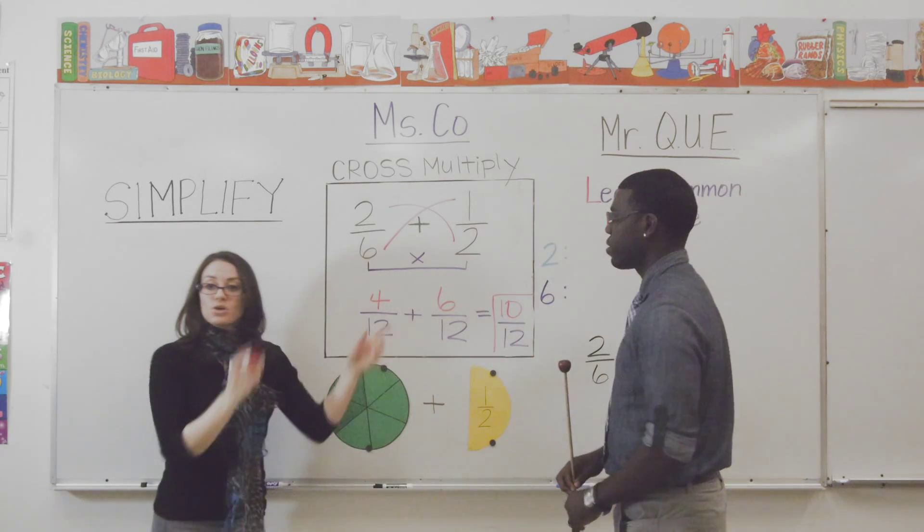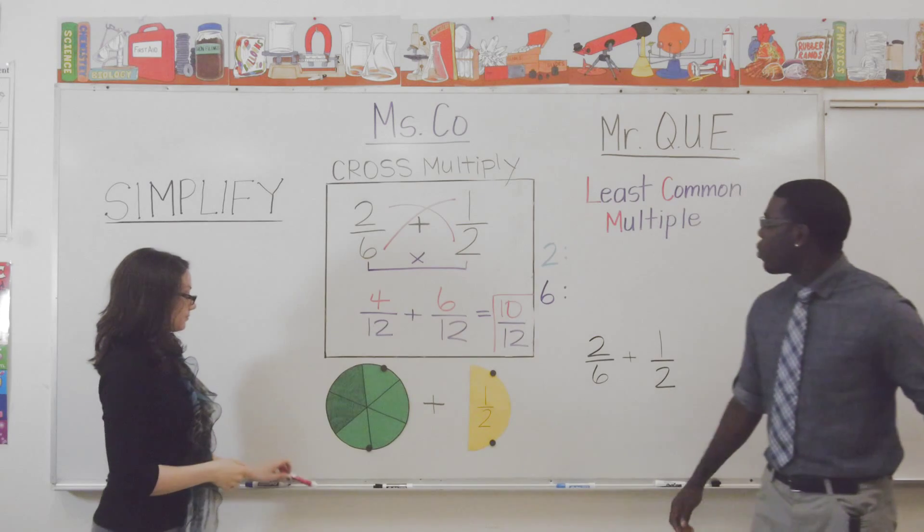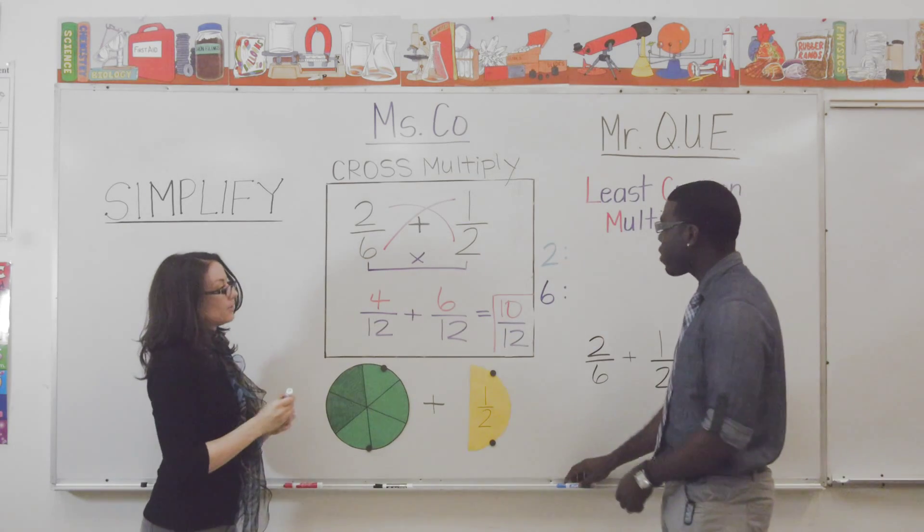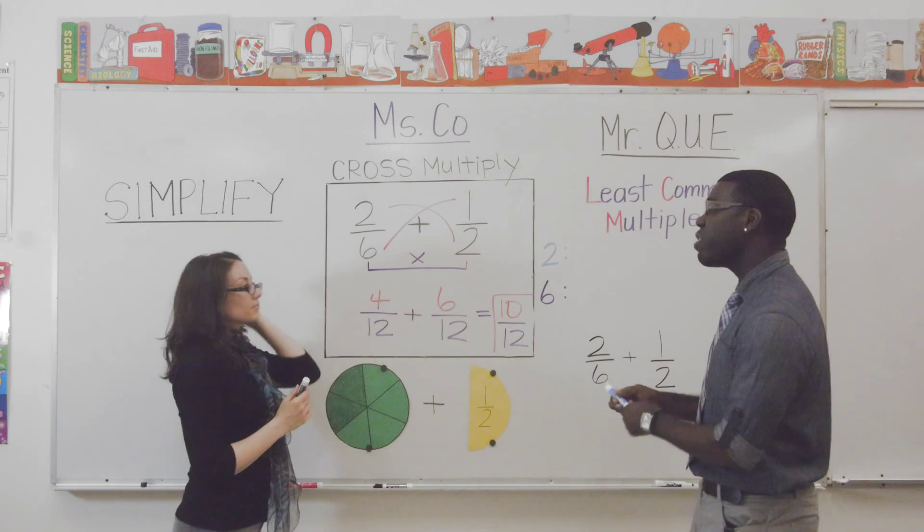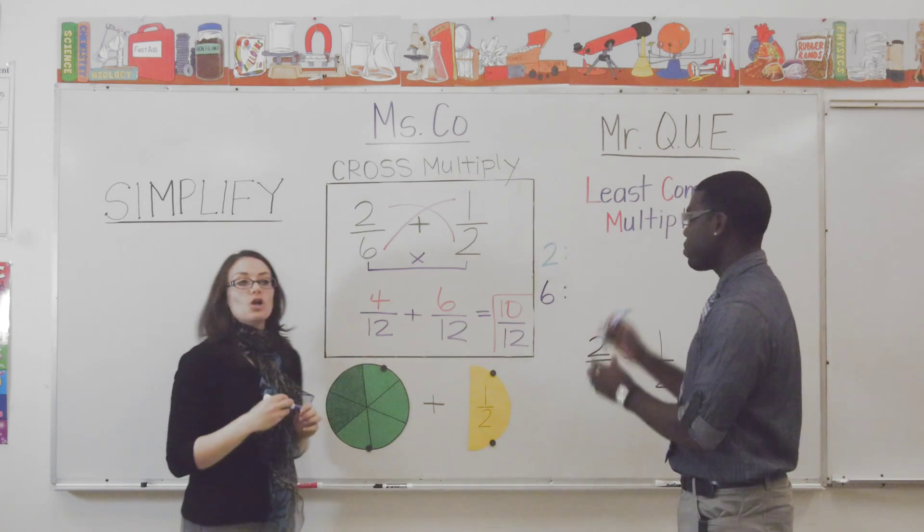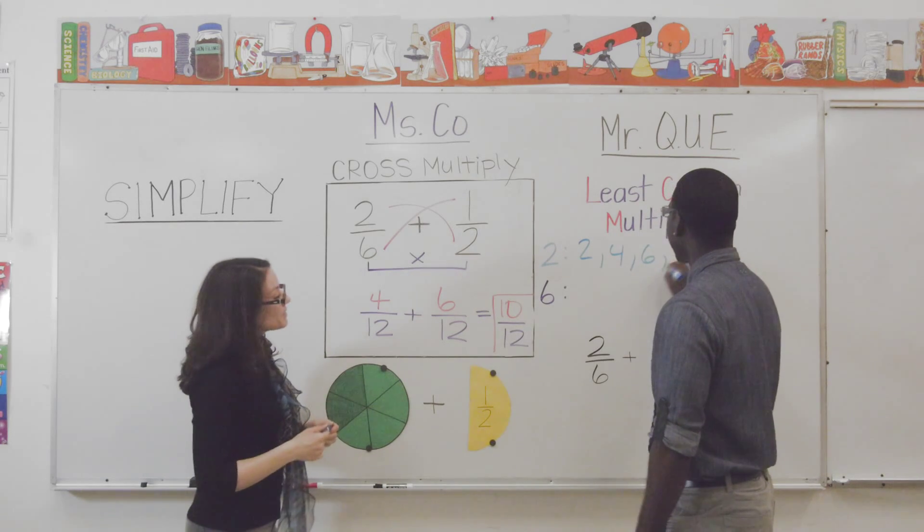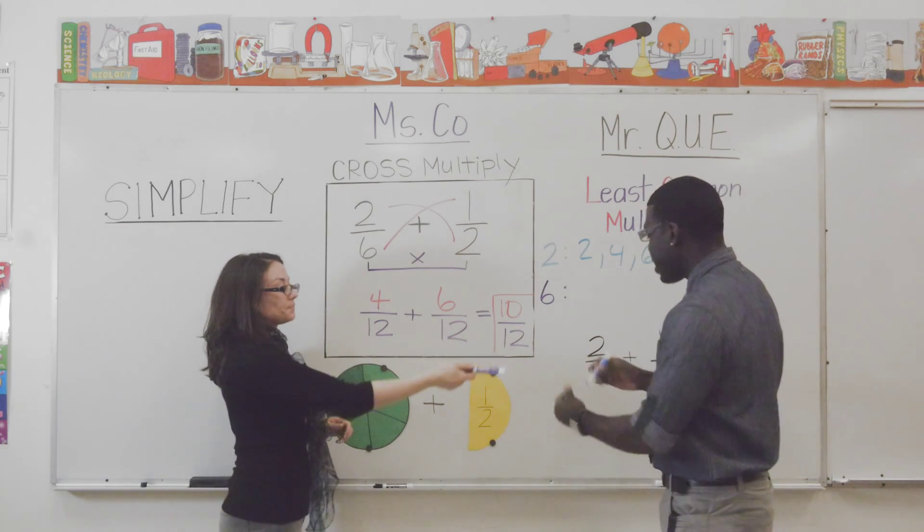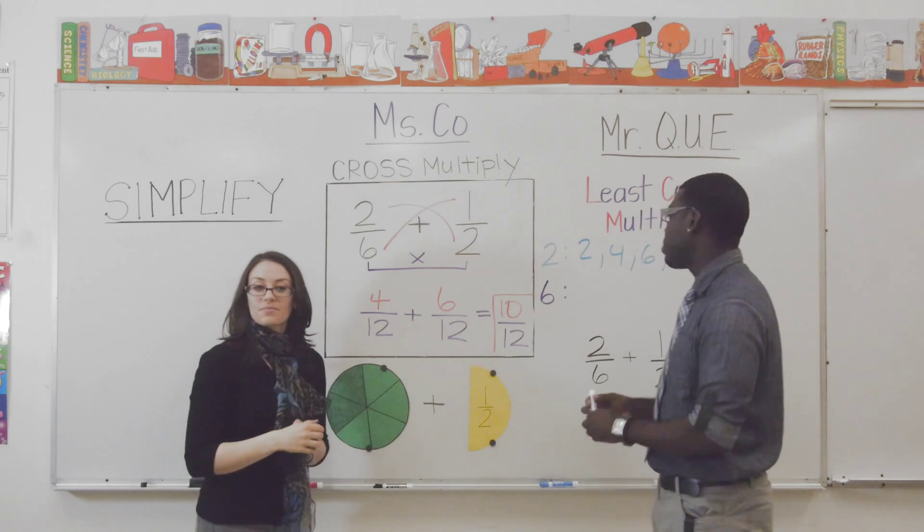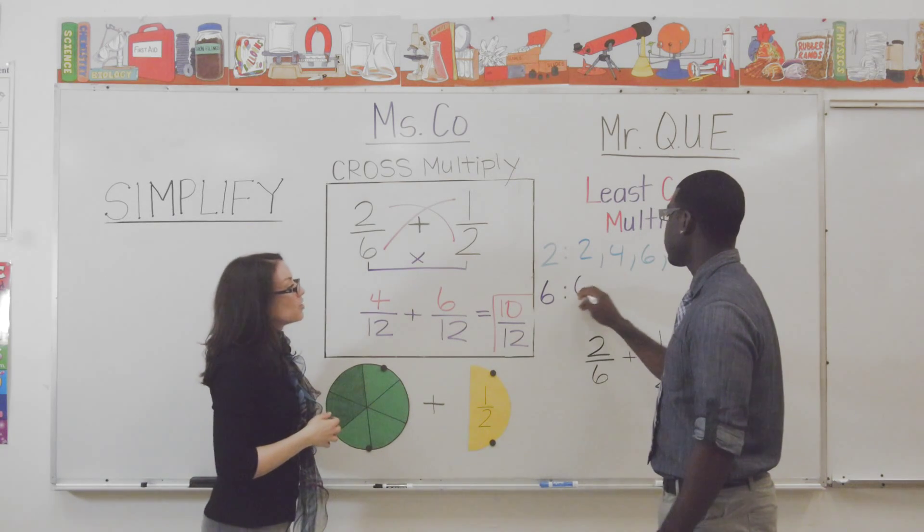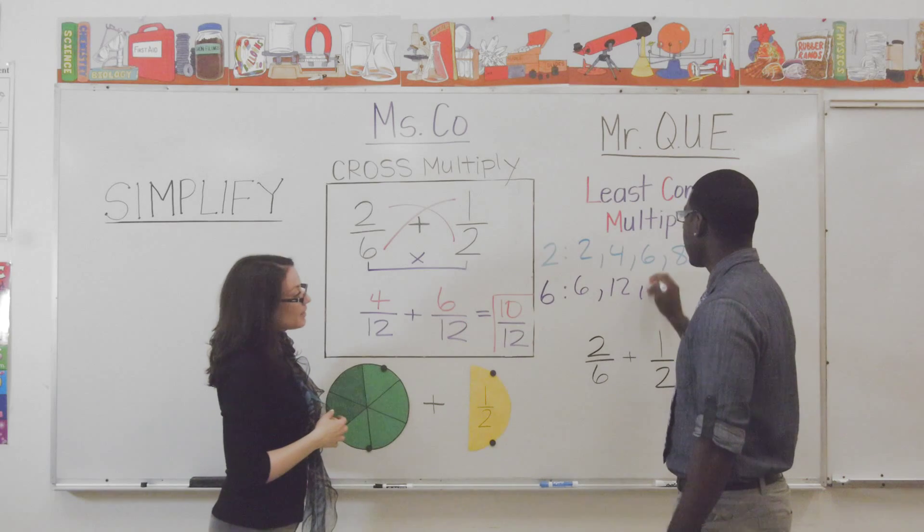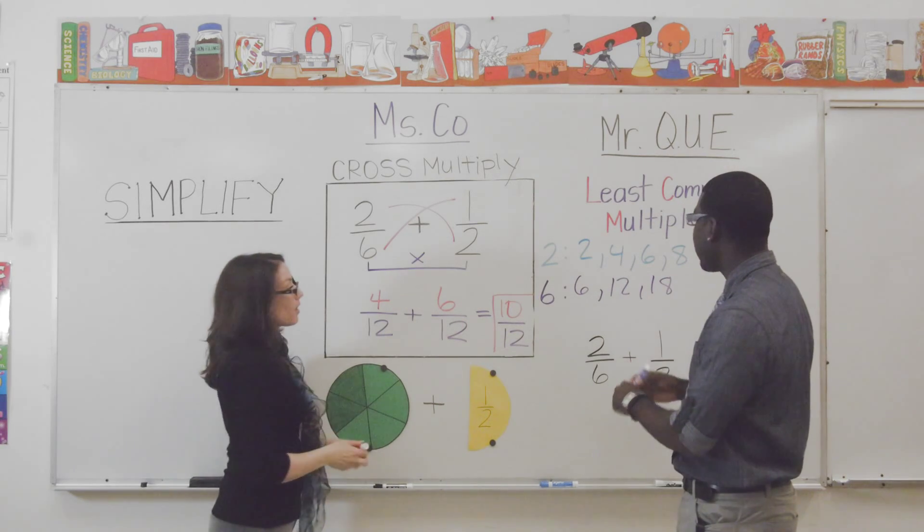Okay. There's another way to do this. Take it away, Q. Okay. Now, we're going to look at the least common multiple. Ms. Coe, first, let's check out the number two. Can you give me a few multiples of two? Okay. Two, four, six, eight. Let's stop right there, okay? And now, let's check out the number six. Just give me the first few multiples of six. All right. Six, twelve, eighteen. Let's stop right there. Six, twelve, and eighteen.